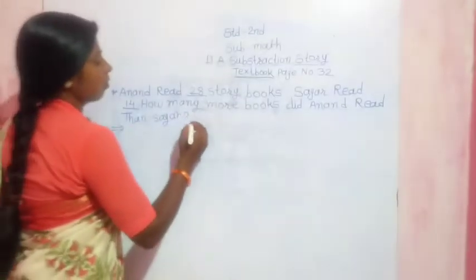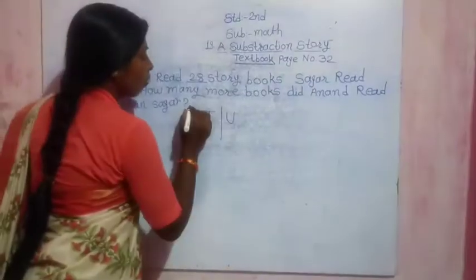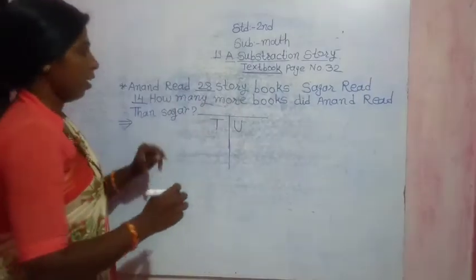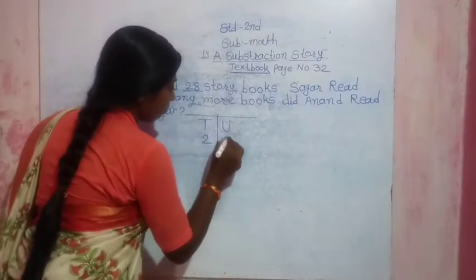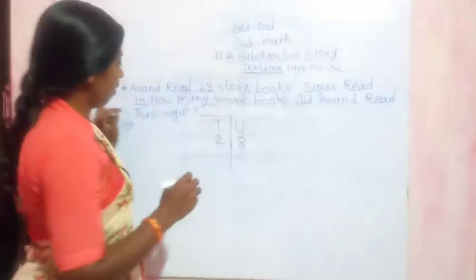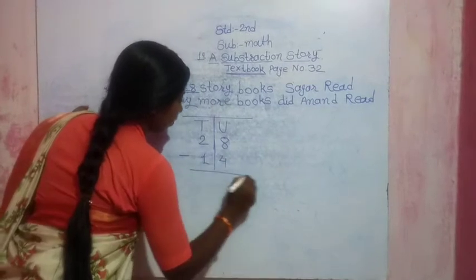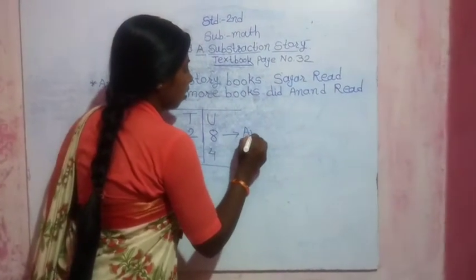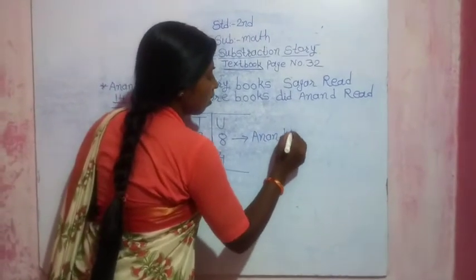So, tens and units. We write 28, and Sagar read 14. Anand read books, Anand read books.